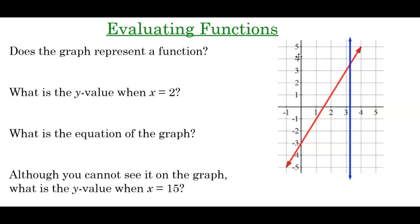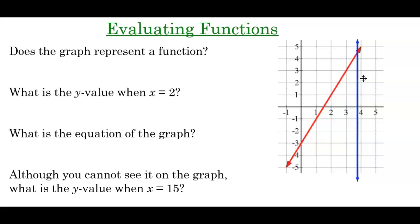So at home, you don't have the ability to slide the vertical line like I do. So every point where I stopped, you would draw a vertical line. You want to draw four, five, enough vertical lines where you can confidently say that the graph you've been given is a function or is not a function. If there's a point where it looks like there might be two points of intersection, draw your vertical line there to check. As we make our way to the end of the graph, we only had one point of intersection on each vertical line.